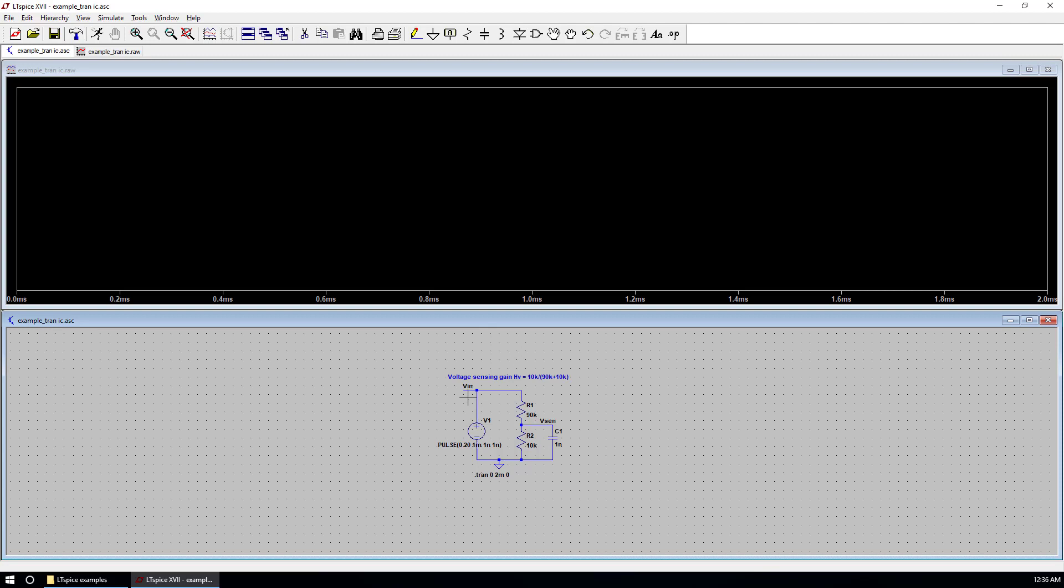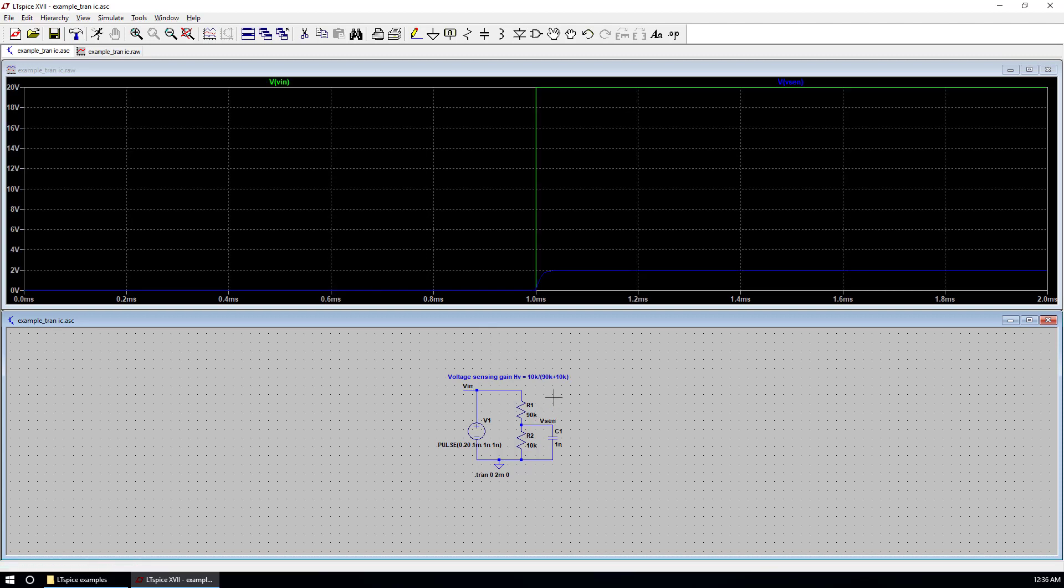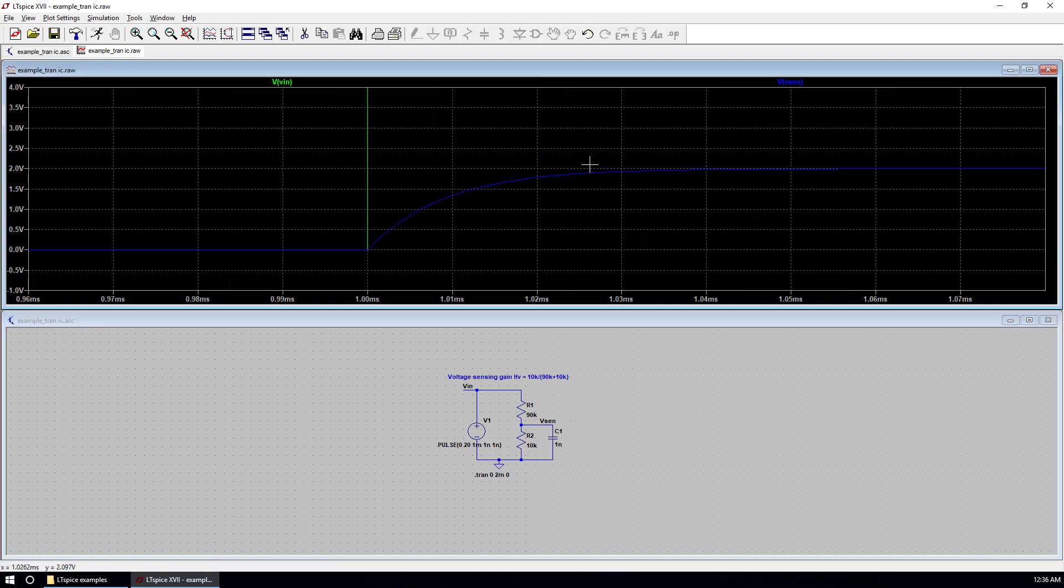Now let's run the simulation. We can put voltage probe over V in and V sense. So this is the rise time by this RC low-pass filter.